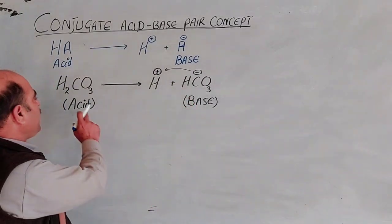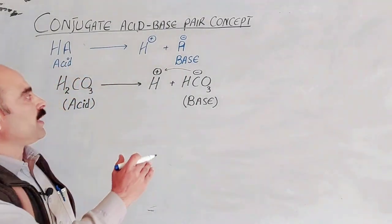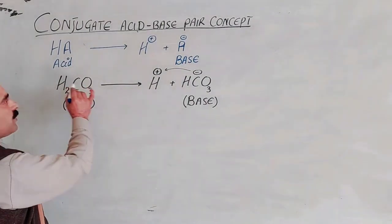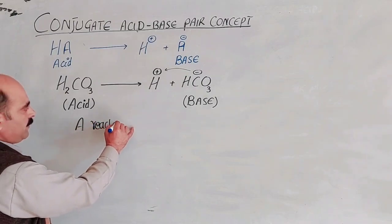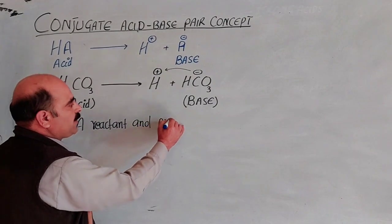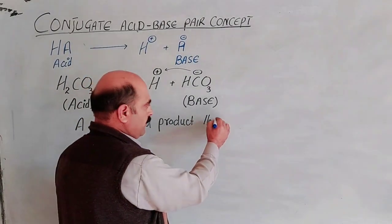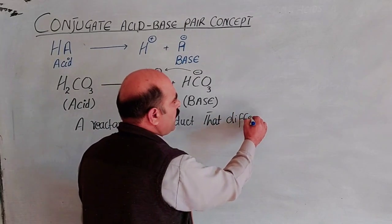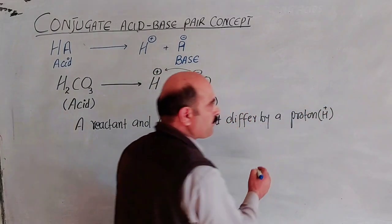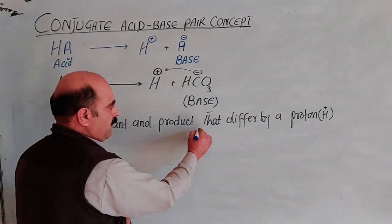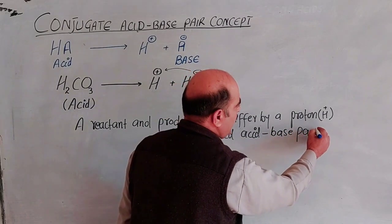The conjugate base is derived from the acid — it differs from the acid only in terms of a proton. The hydrogen ion, or proton, is removed. A reactant and a product that differ by a proton only are called an acid-base pair.